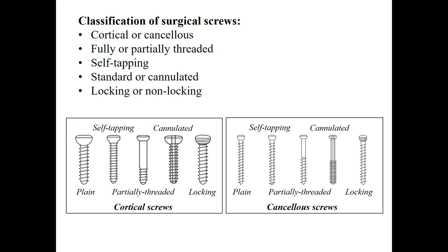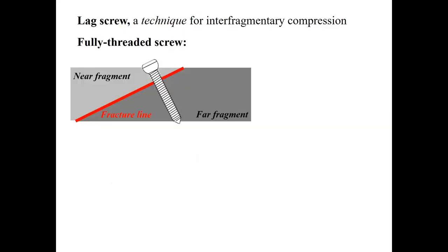In a locking screw, the head is also threaded. This type is used to fix a locking plate, which has reciprocal grooves around the plate holes.